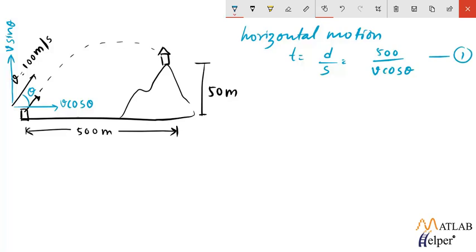Now considering the vertical motion, we know that the velocity with which the flight starts is given by v sin theta. The displacement that the rocket will undergo through the entire motion will be 50 meters because in the end it has to hit the target. So that would be our displacement.